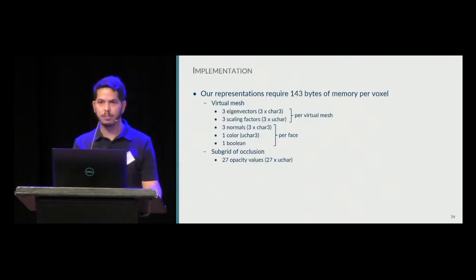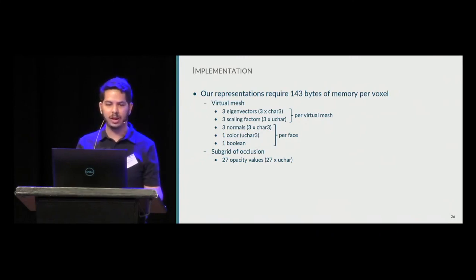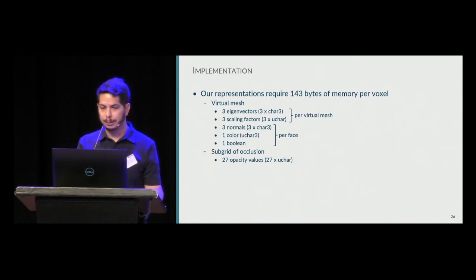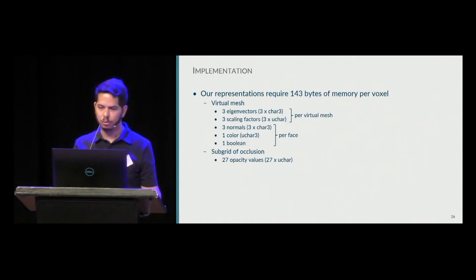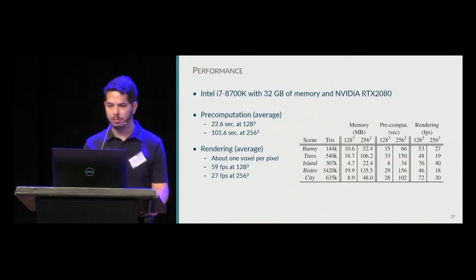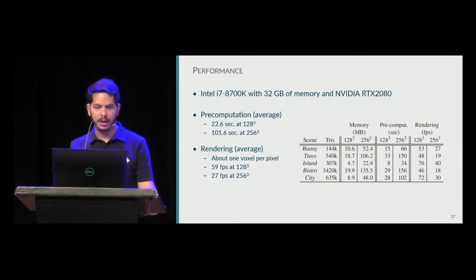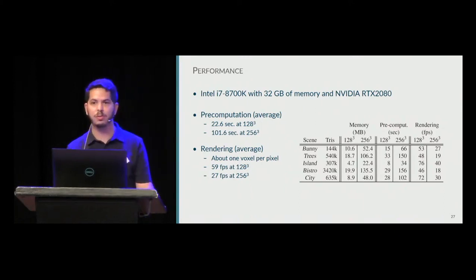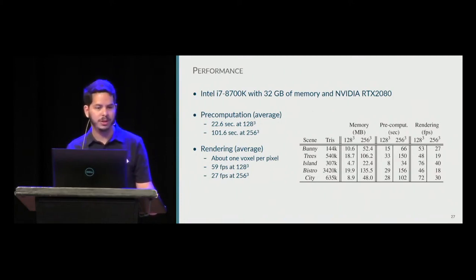Our representation requires 143 bytes of memory per voxel. For the virtual mesh, we store three eigenvectors and three scaling factors to reconstruct it, plus three normals, one color, and one boolean per face — the boolean encodes whether the face has a distribution of normals or a fixed set. For the occlusion subgrid, we store one value per subgrid element, giving a total of 27 values. We tested on an Intel i7 with 32 GB of memory and an NVIDIA RTX 2080 GPU. Scenes range from 100,000 to 3 million triangles. Precomputation took on average 22 seconds at 128³ resolution and 101 seconds at 256³ resolution. Rendering achieves on average 59 frames per second at 128 and 27 frames per second at 256.